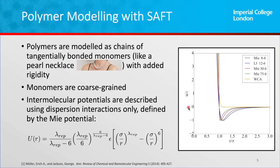Each pseudoparticle — these coarse-grained segments — interact with each other using a Mie potential. A Mie potential is a generalised Lennard-Jones potential, exactly the same as a Lennard-Jones potential if one of its variables, lambda repulsive, is 12. Imagine making a Lennard-Jones potential more versatile by giving it a variable range. By manipulating this extra variable, we could have a potential where the position of the minimum changes and the potential becomes harder or softer. This provides an additional degree of freedom to get a better fit to our models.